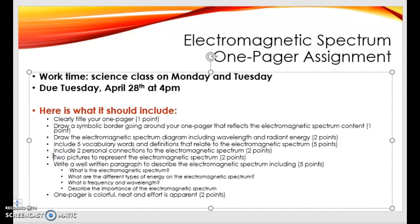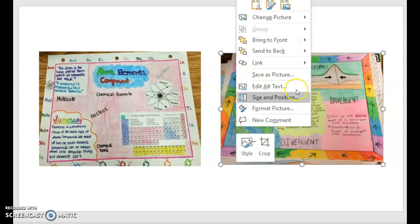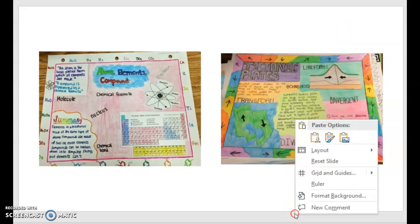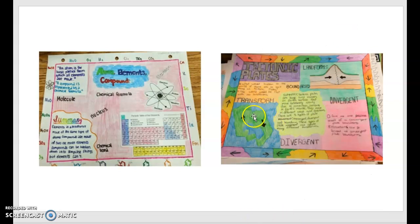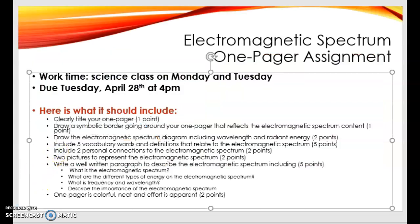Then you want two pictures to represent the electromagnetic spectrum. If you take a look at the examples, they have pictures of the different types of boundaries — those would be examples. They have a picture of an atom over here — that would be an example. So different things that you can put in for the electromagnetic spectrum, but just two pictures that represent the electromagnetic spectrum.